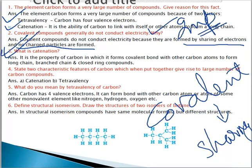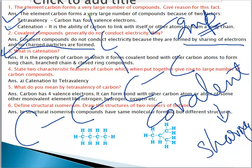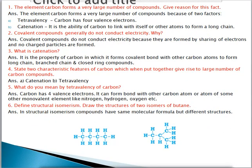Next: what is catenation? It is a property of carbon in which it forms a covalent bond with other carbon atoms to form a long chain. Carbon can also form branching or a ring-like structure, like in benzene. So catenation is a property of carbon by which it forms covalent bonds with other carbon atoms to give a long chain, branching, or a closed ring compound. Question four asks to state two characteristic features of carbon that give rise to a large number of carbon compounds — again the two points are catenation and tetravalency.